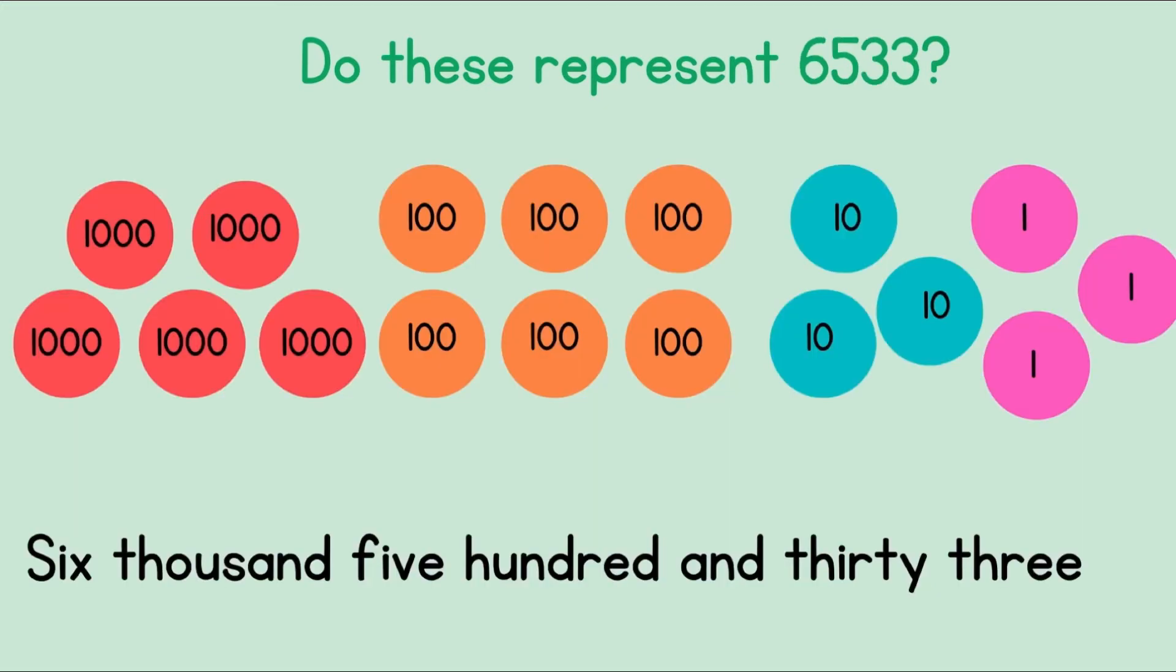Let's try the next one. Do these represent 6,533? Here we have our number counters. Let's count them. 1,000, 2,000, 3,000, 4,000, 5,000. We have 5,000 counters over here but we know that our number is 6,000. So this one is not correct.